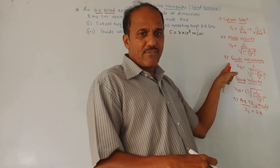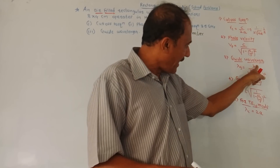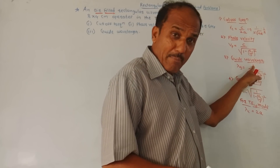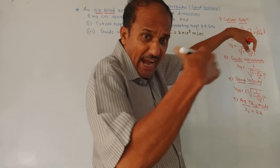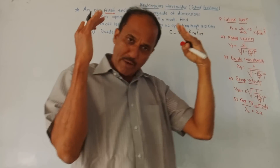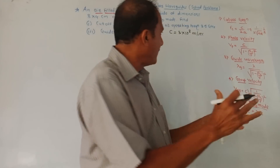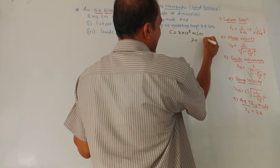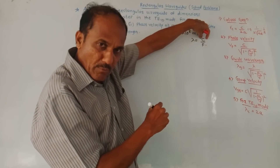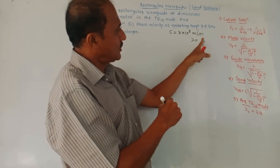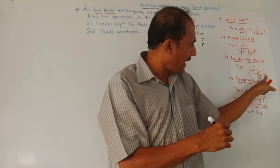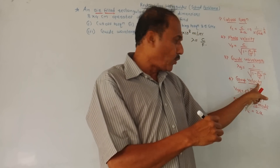Third, guide wavelength. The notation is lambda g, which is lambda upon square root of 1 minus (fc by f) squared. This term lambda is the generalized wavelength — you may call it the operating wavelength — and this operating wavelength is given as c upon f, where c is the speed of light and f is the operating frequency.